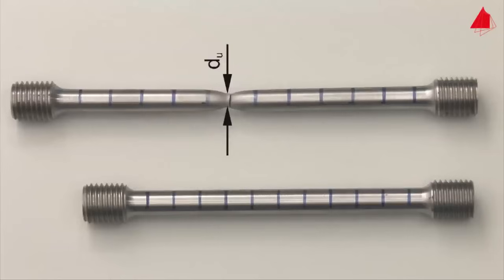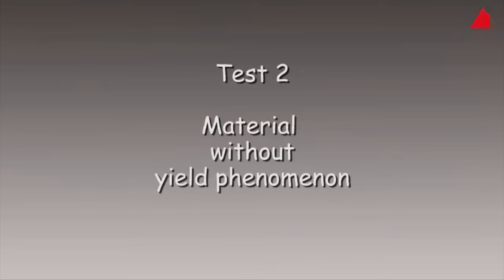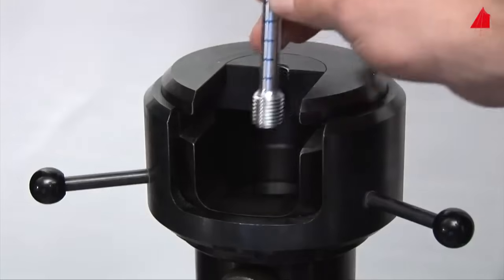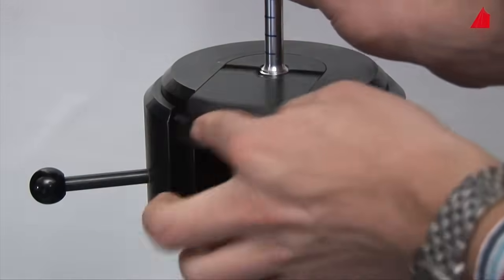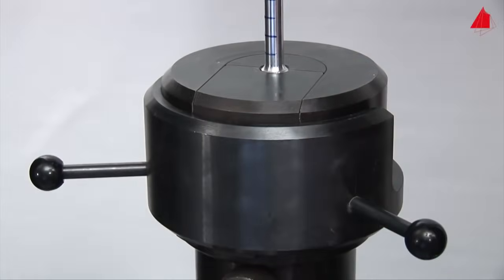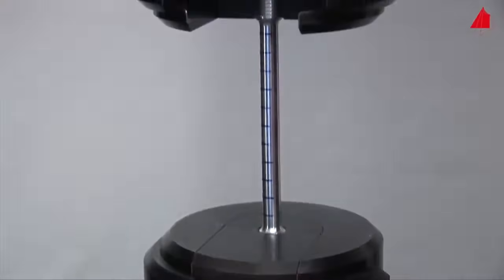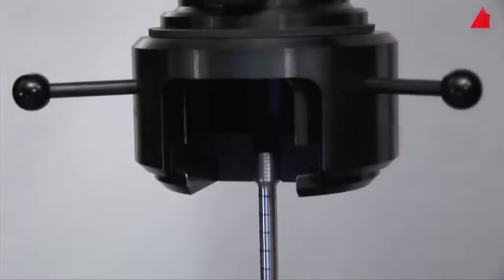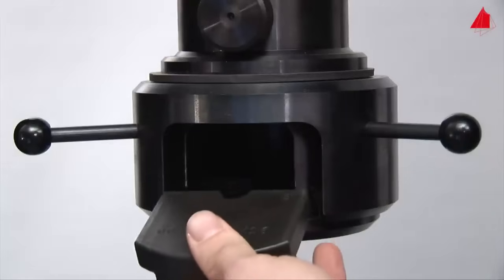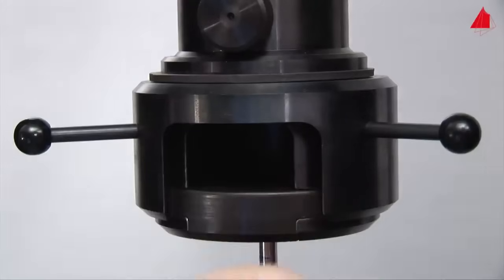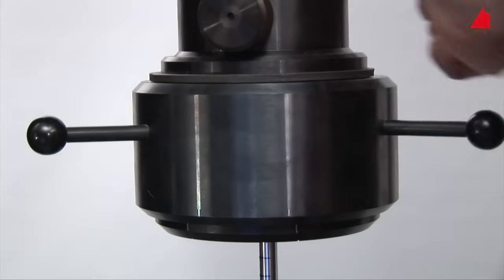In the second tensile test, a material without yield point phenomenon is to be tested. In this case, it is a precipitation strengthened aluminum alloy. The test piece has exactly the same shape and dimensions as the specimen in the first test. It is cylindrical with an original diameter of 10 millimeters and an original gauge length of 100 millimeters.